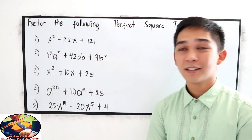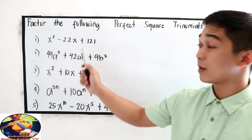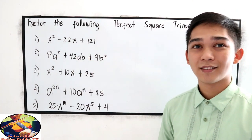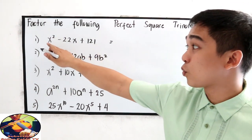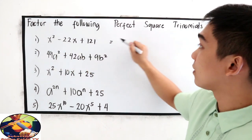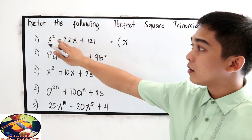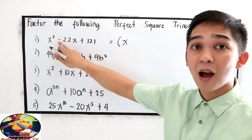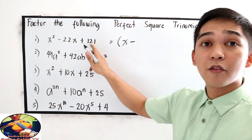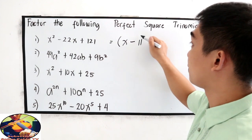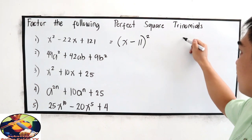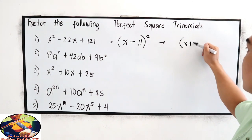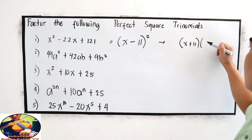For number 1, x squared minus 22x plus 121. So this is a perfect square trinomial. Square root of the first term, that is x. The sign of the middle term, just copy, minus. Square root of 121 is 11, then square. That is x minus 11 squared. Now x minus 11 times x minus 11.